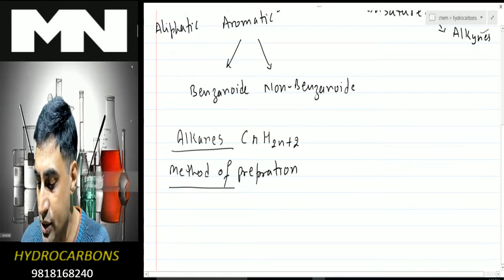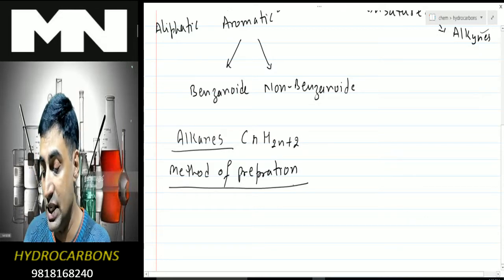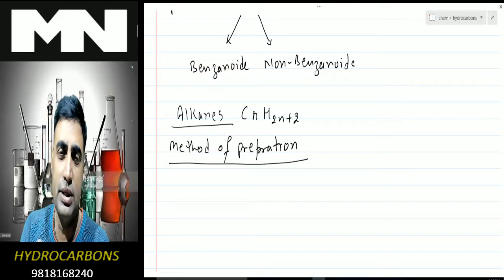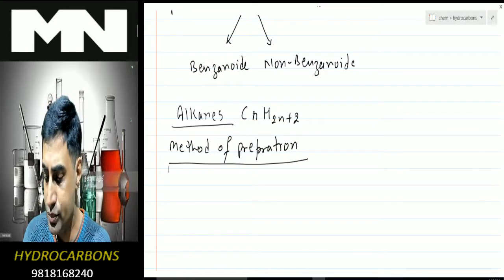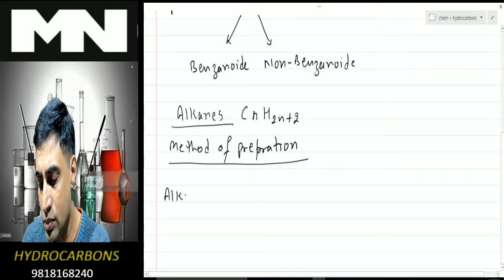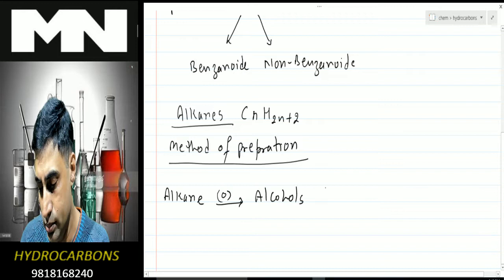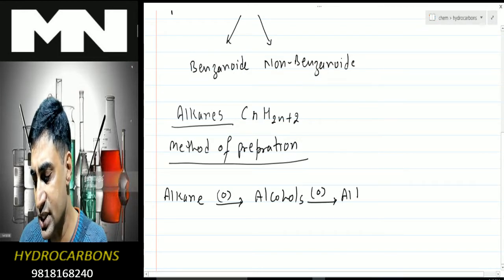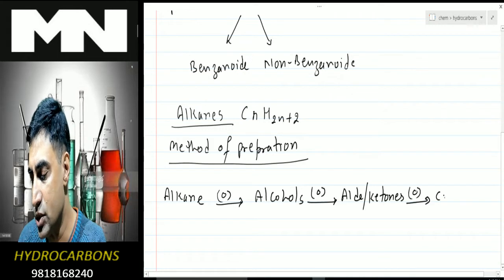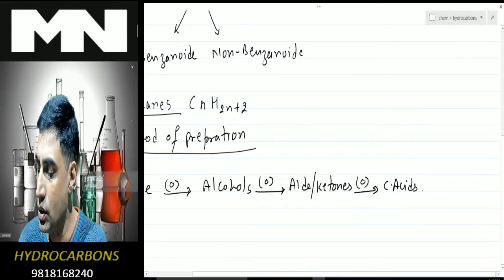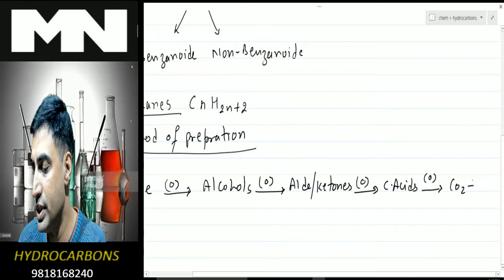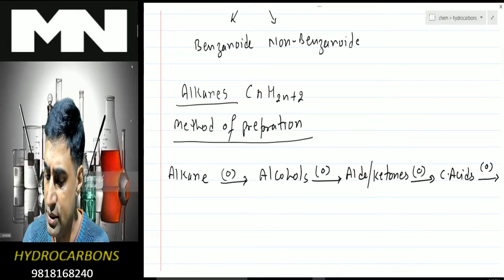Before starting with the method of preparation, I'll give you a general flowchart which will help with many conversions. Alkanes on oxidation give us alcohols; alcohols on oxidation give aldehydes or ketones; which on oxidation give carboxylic acids. Oxidation is the addition of oxygen or removal of hydrogen. Carboxylic acid on further oxidation gives CO₂ and H₂O — that is the end product.